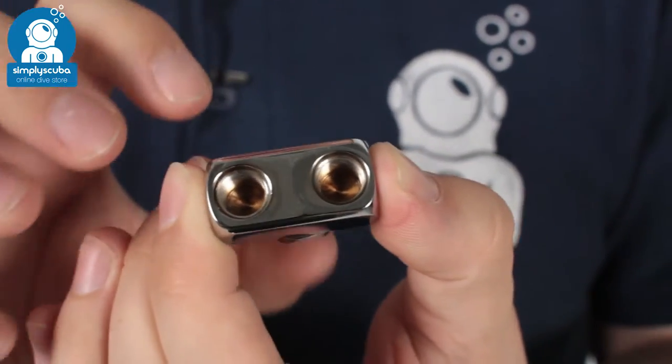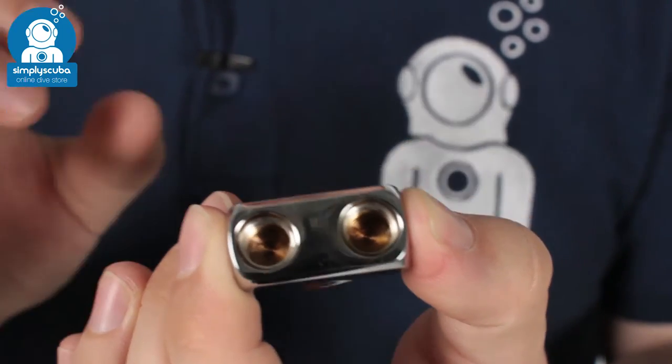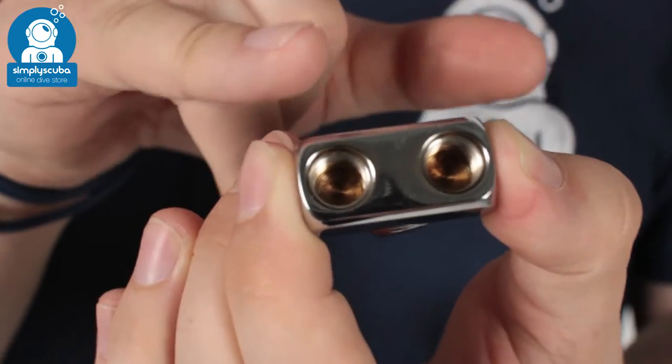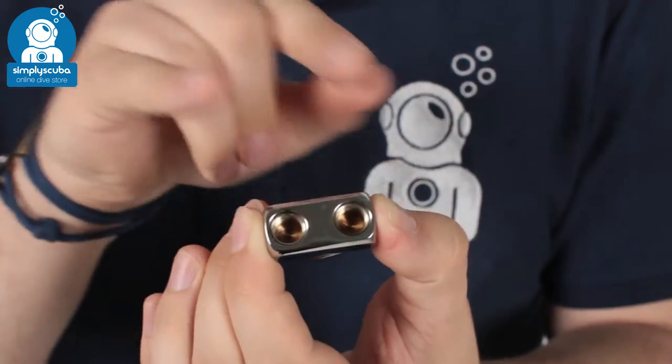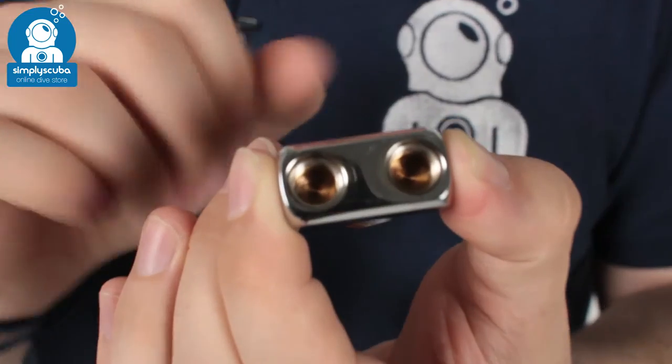If you're limited on the number of low-pressure ports on your first stage and you need an extra low-pressure hose coming off of it, you can split a single low-pressure hose into two low-pressure hoses. Very handy.